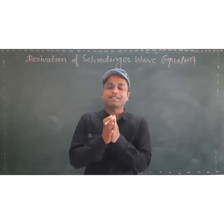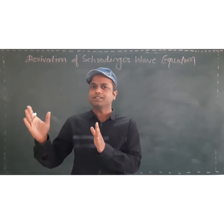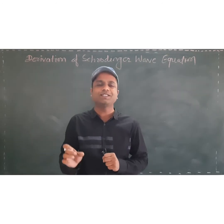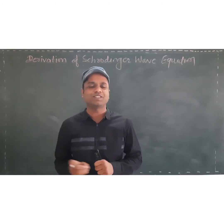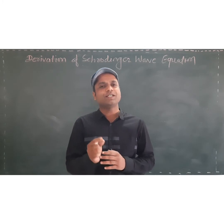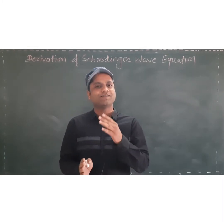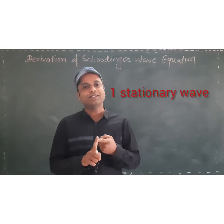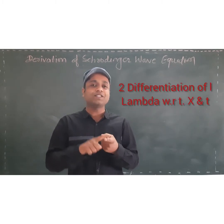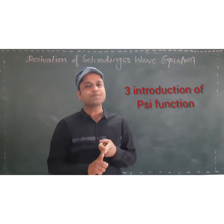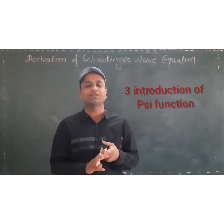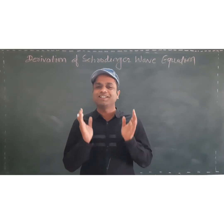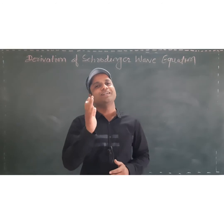He considered a stationary wave equation which was already studied. From the stationary wave equation, he derived the Schrödinger wave equation. The derivation of the Schrödinger wave equation is divided into three parts: first is the stationary wave; second is differentiation of the wave function with respect to x and with respect to t; and third is the introduction of the psi function. I am assistant professor Nilesh Godin — let us start.